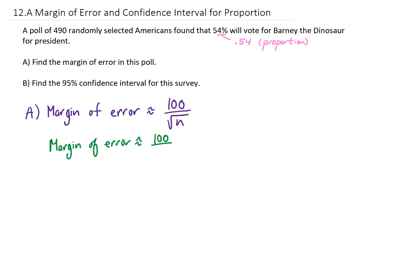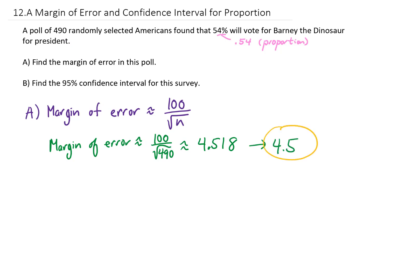So in our example, our n value is 490 because there were 490 people surveyed. Typing that into my calculator gives me 4.518, which we can round to the nearest tenth: 4.5. This tells us that the margin of error on this particular poll is about 4.5%.